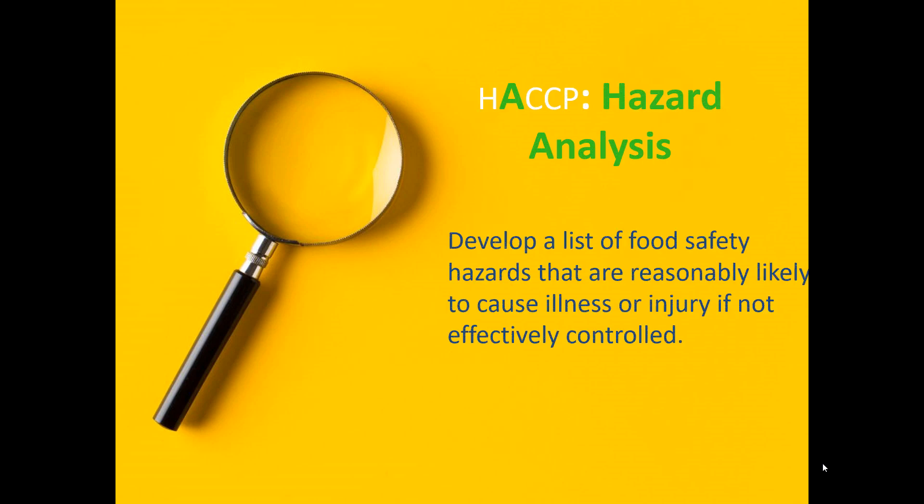How do you analyze them? You do a hazard analysis. Hazard analysis is where you look at your system — in the butcher scenario, you look at the process of preparing the meat and determine what could go wrong and what types of hazards could get into the food. As we've learned, there are three: biological, chemical, or physical.